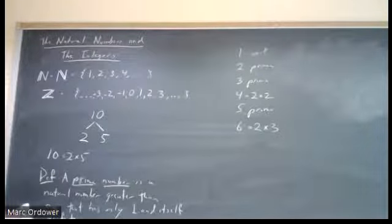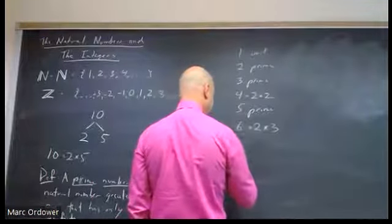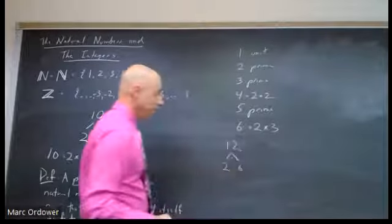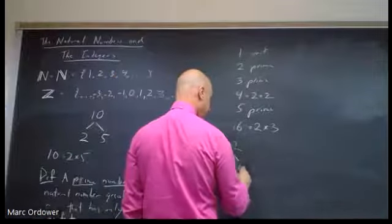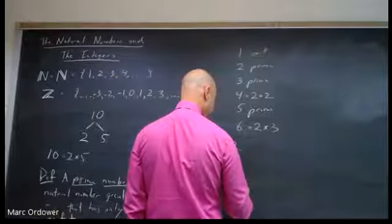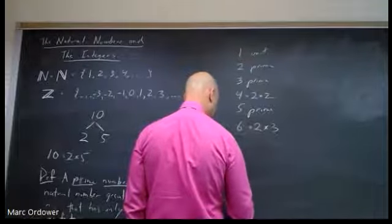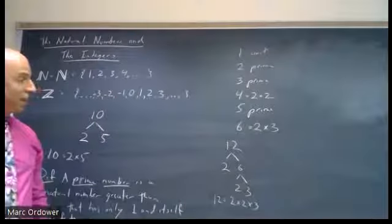Let's go ahead and factor another number. Let's take a number like 12. So I can factor 12 as, say, two times six. 12 is two times six. Now, two is prime, but six is not. Six factors further. Six factors as two times three. So 12 is equal to two times two times three. That's called its prime factorization.